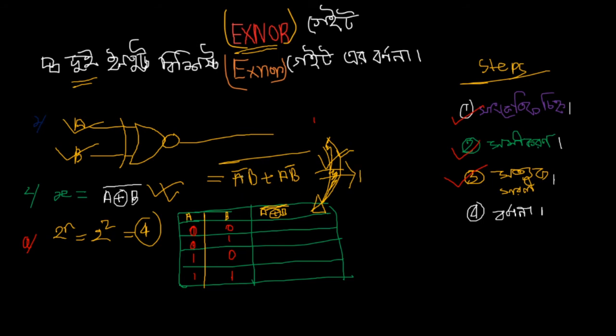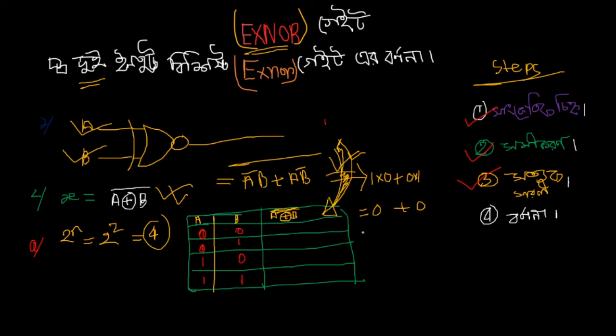If A is 0, then A complement is 1. And B is 0, so B complement is 1. Working through the formula: A complement times B equals 1 times 0, which equals 0. And A times B complement equals 0 times 1, which is also 0.